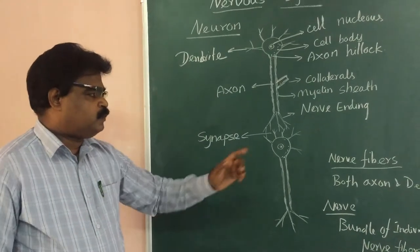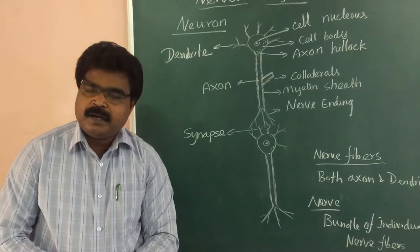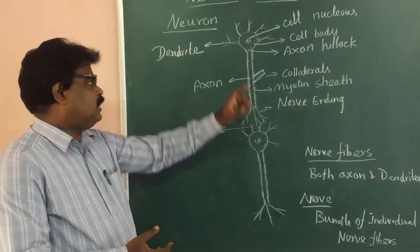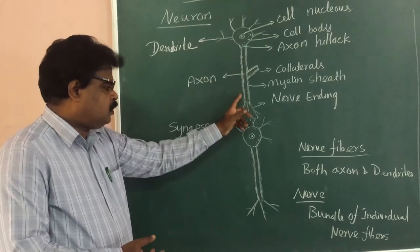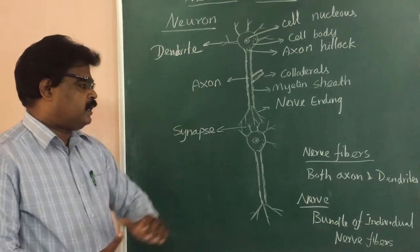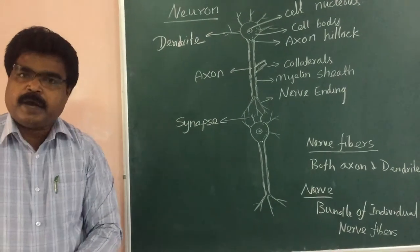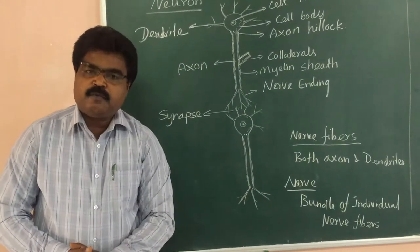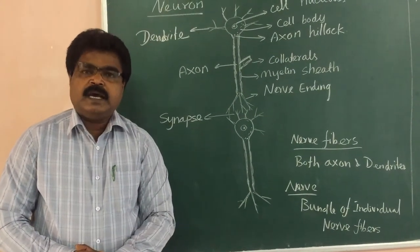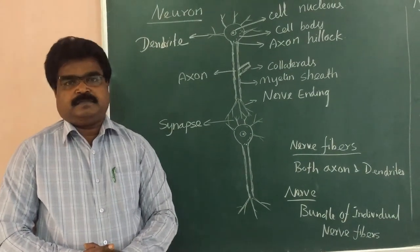The dendrites and axon put together are called nerve fiber. The bundle of individual nerve fibers is called a nerve.